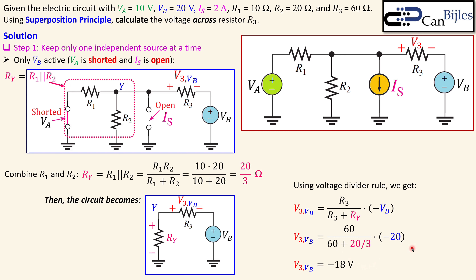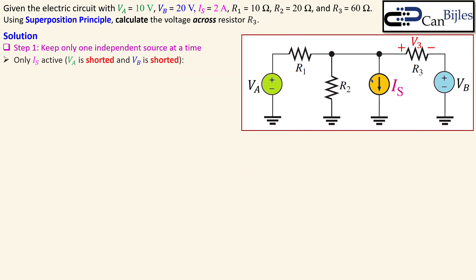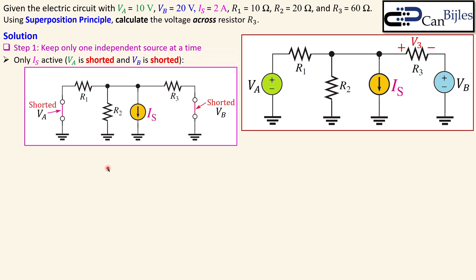The final source to consider is Is, the DC current source. Activating only Is means both voltage sources are shorted. This produces a circuit with Va shorted, Vb shorted, Is still in place, and all three resistors present. I want to use the current divider rule, which I think is the easiest approach. To do so, I need to reduce the circuit to a current source with two resistors, keeping R3 separate.